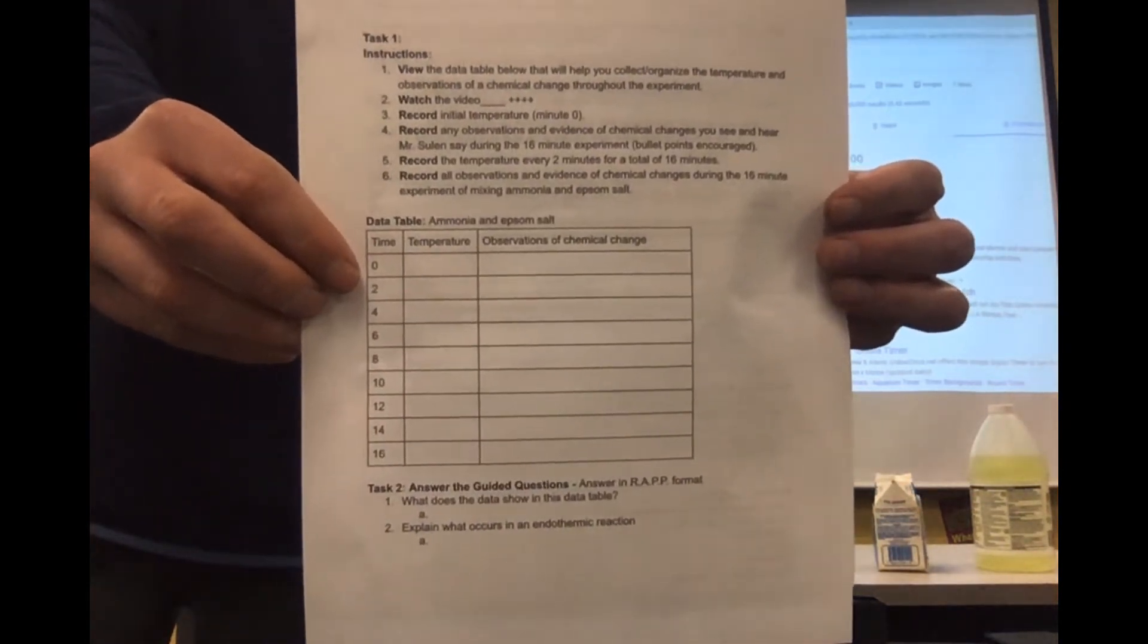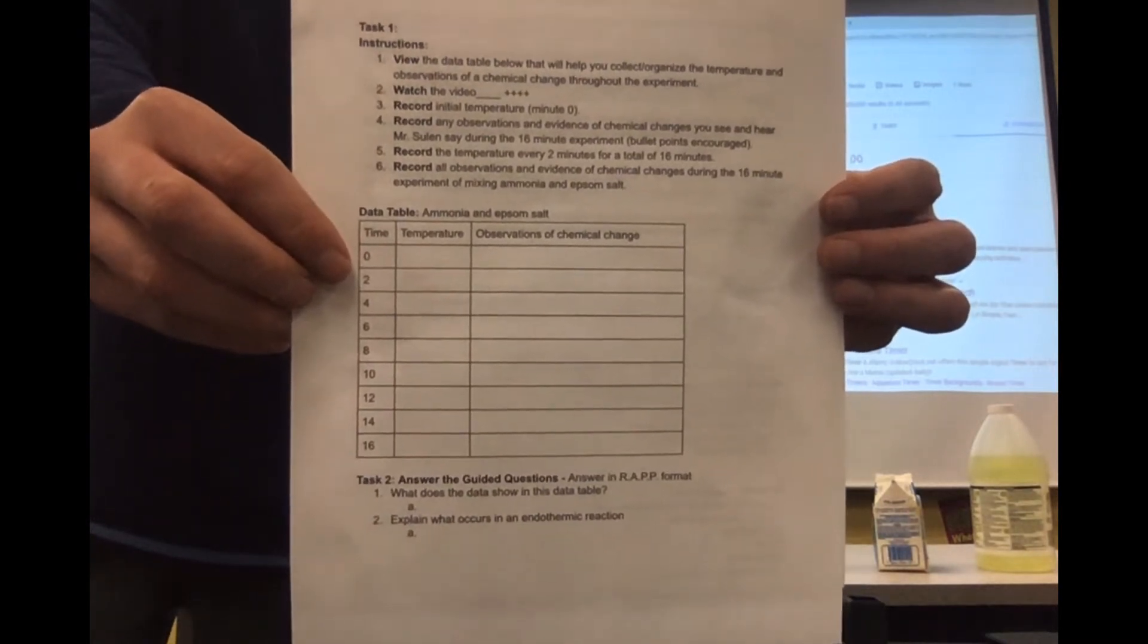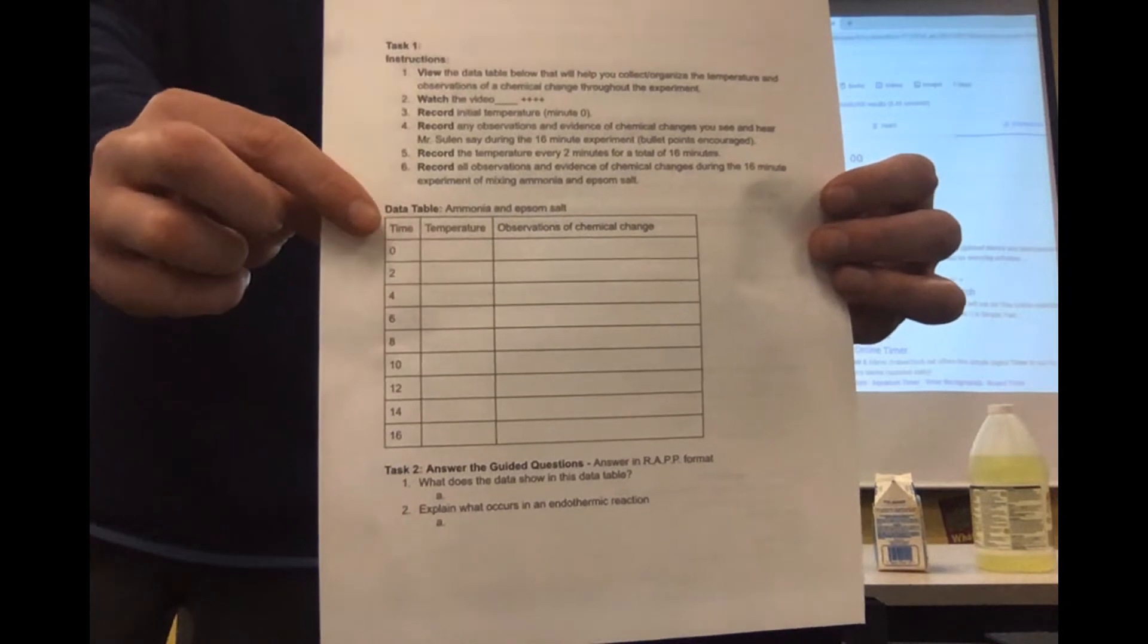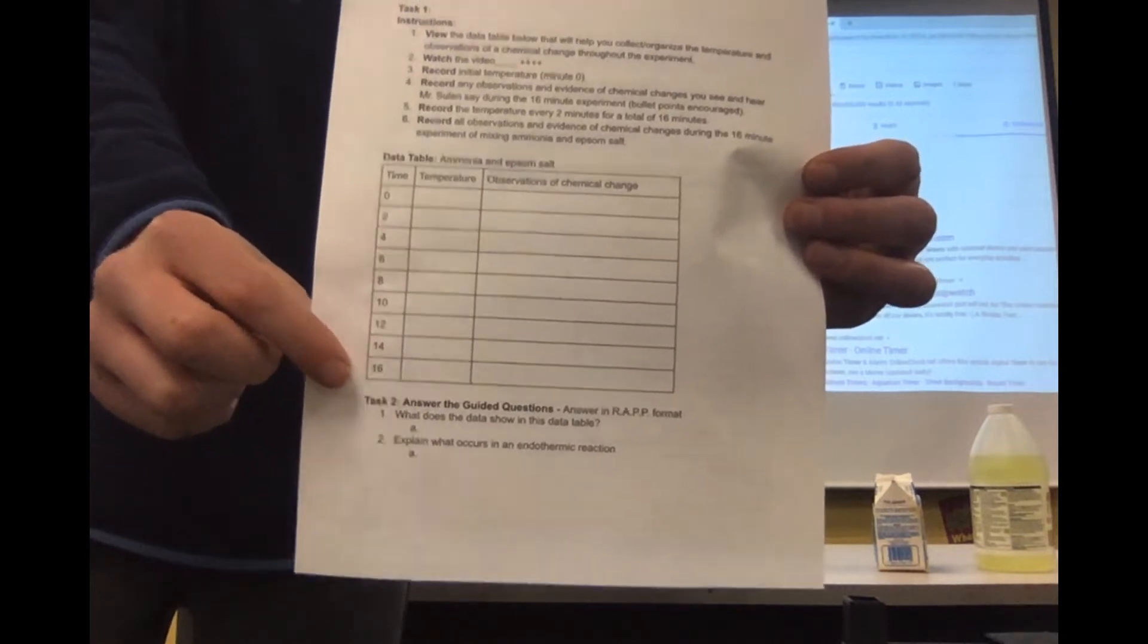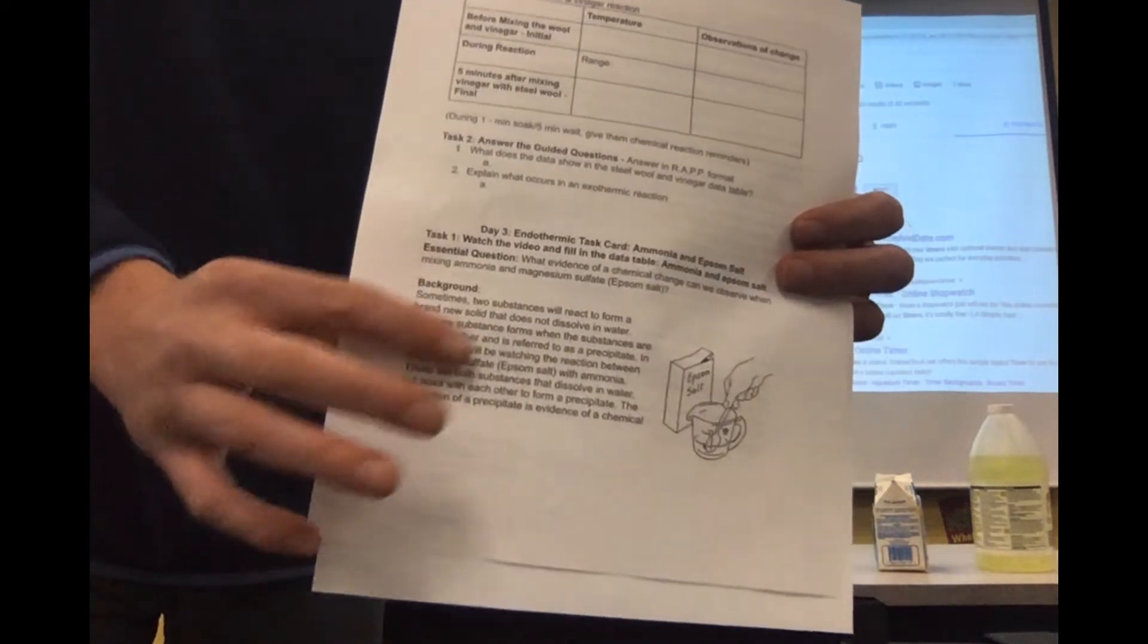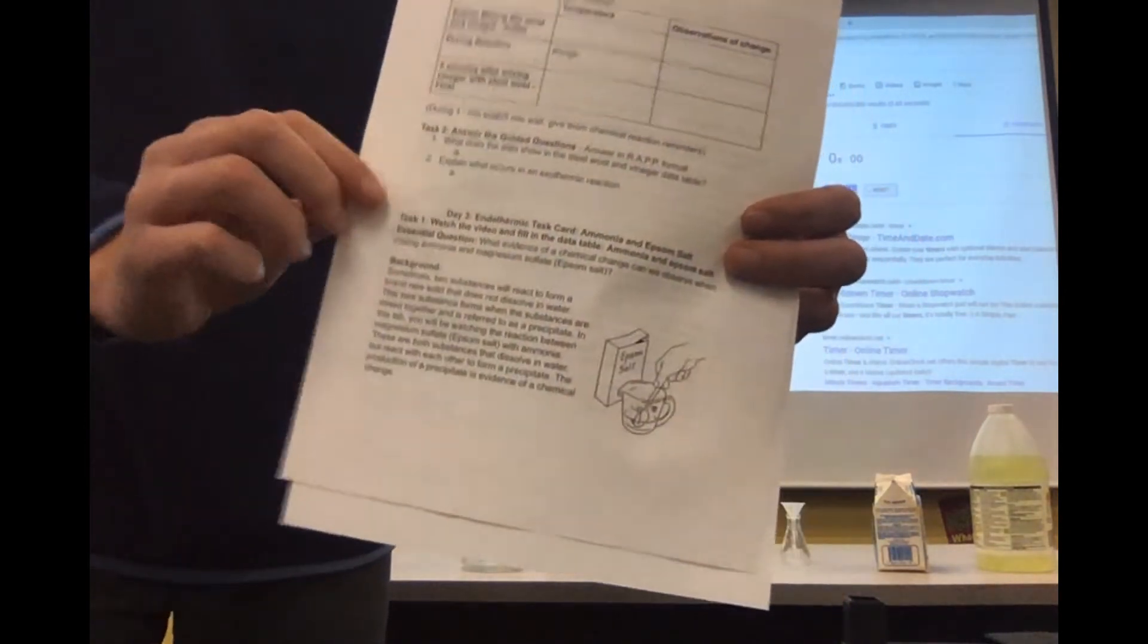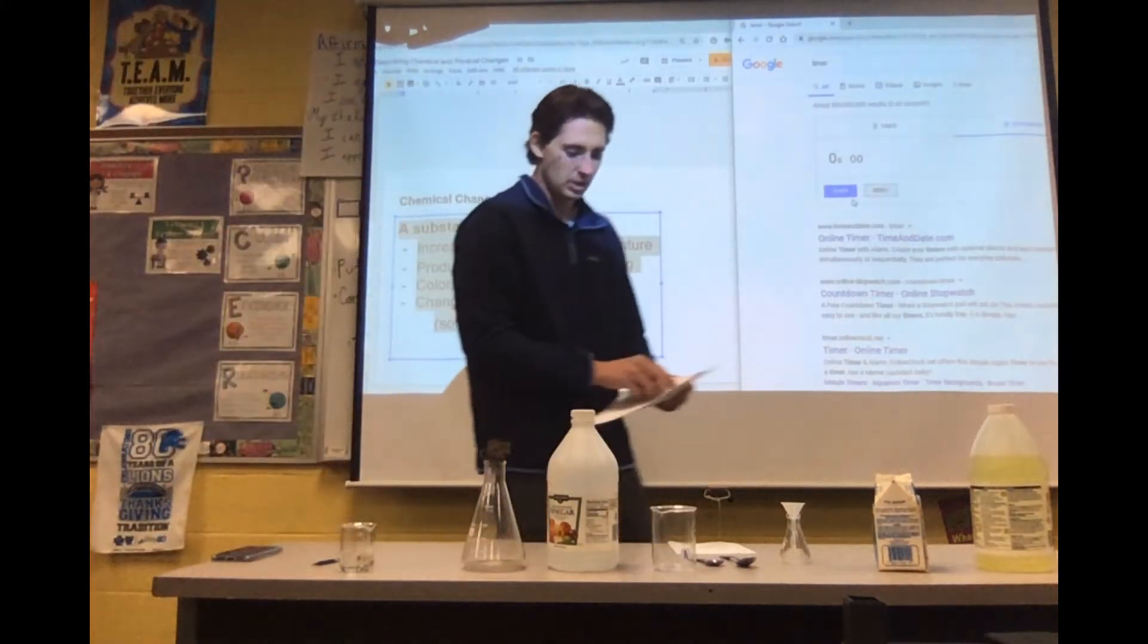Essential question: what evidence of a chemical change can we observe when mixing ammonia and magnesium sulfate or epsom salt? As you can see we start the data table at minute zero, the initial temperature, final temperature is 16. Once every two minutes we are going to be taking the temperature of our reaction. Make sure you are reading the background information right here next to the little picture so you have a really good understanding.